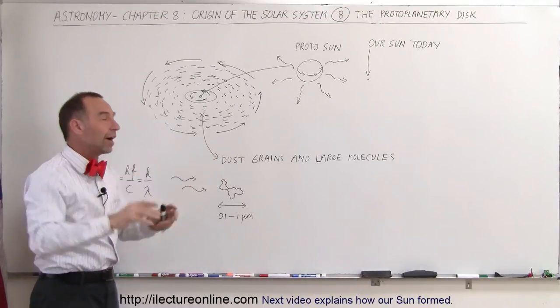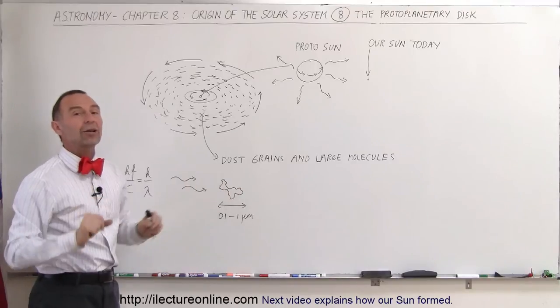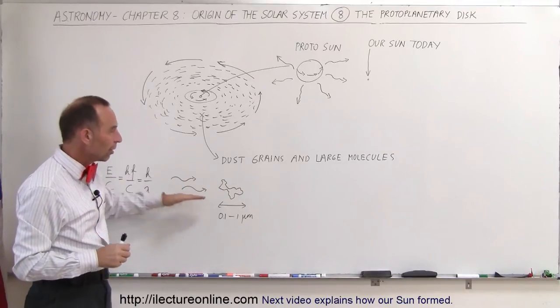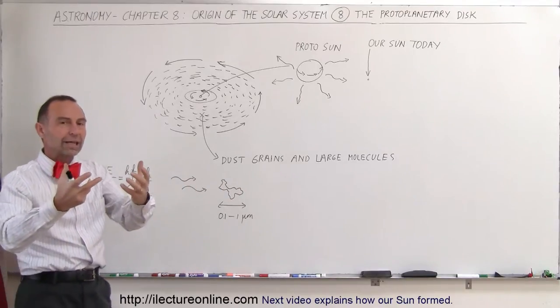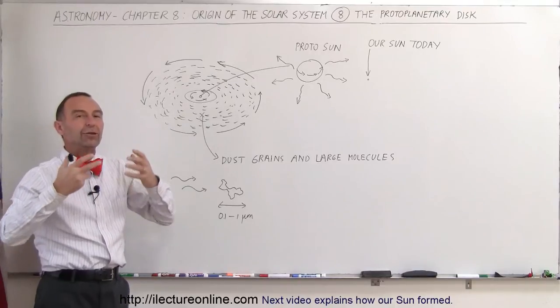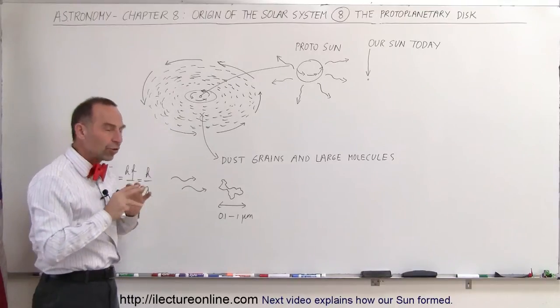And so those small little dust grains would no longer get pulled into the Sun, into the emerging proto-Sun, but started getting pushed out by the radiation coming from the proto-Sun.